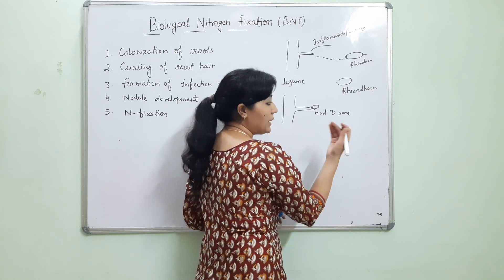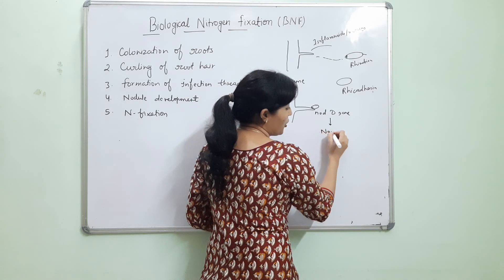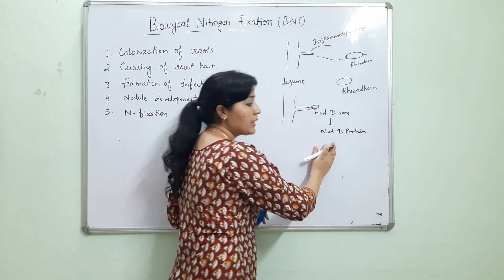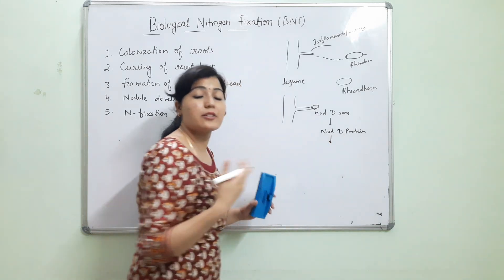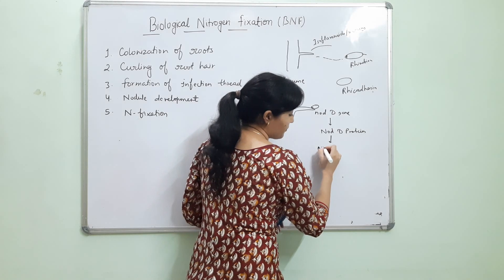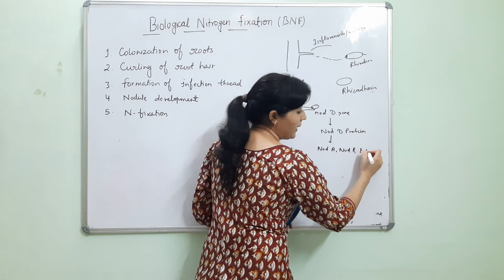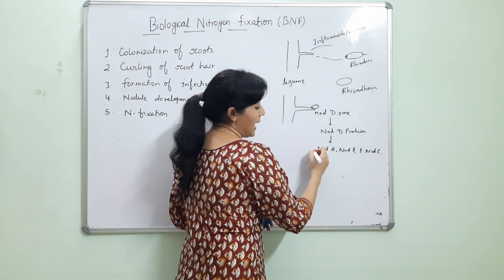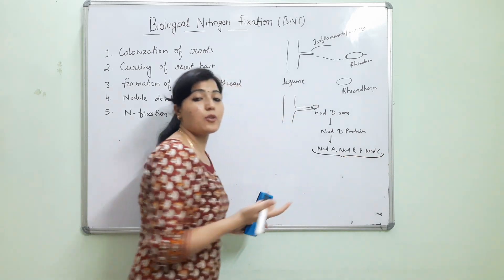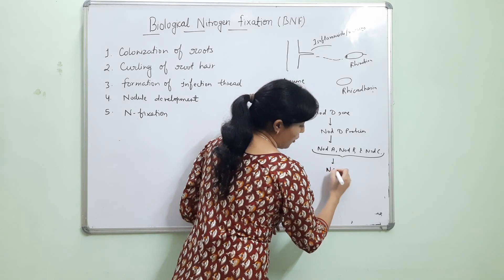The secretion of phenolic compounds induces the transcription of the regulatory nod gene (small 'n' is used for the gene; capital 'N' indicates the enzyme). This gene makes a protein called the Nod protein, which then promotes the transcription of other enzymes — NodA, NodB, and NodC. These enzymes are responsible for the synthesis of the nod factor.